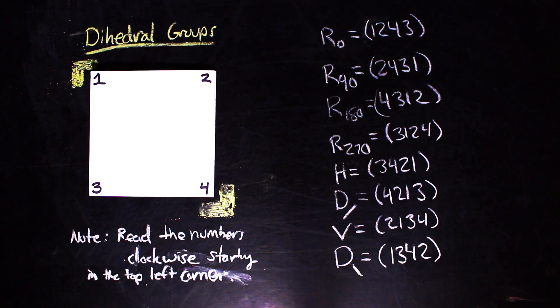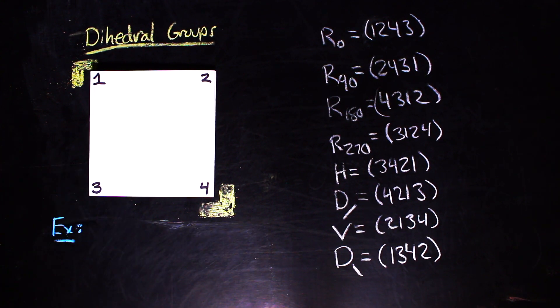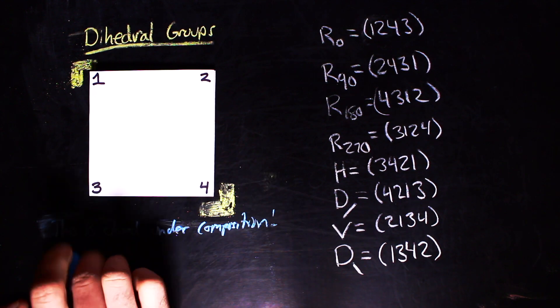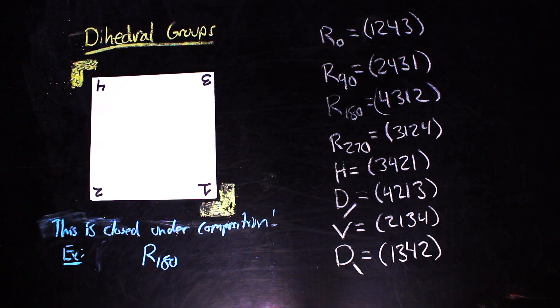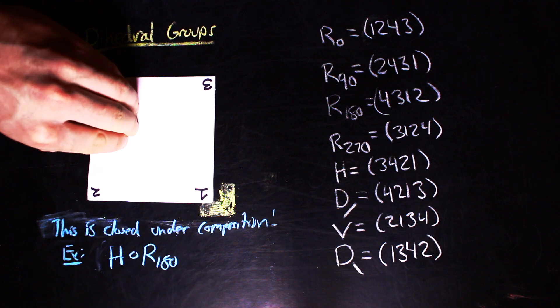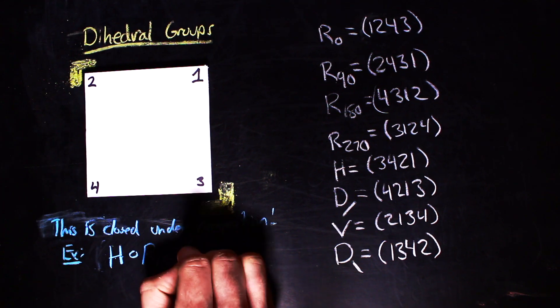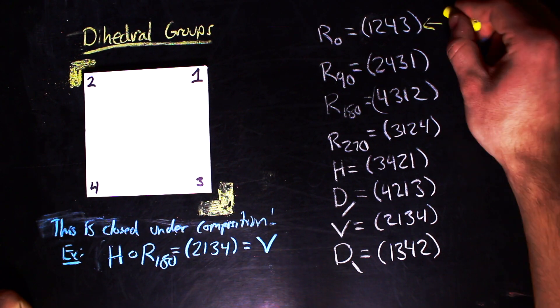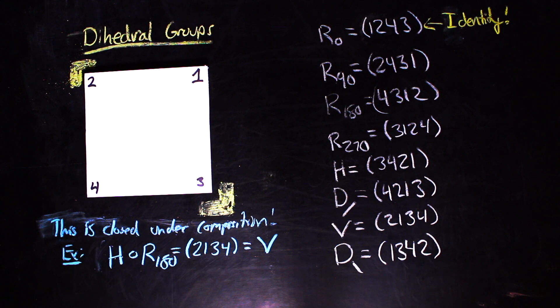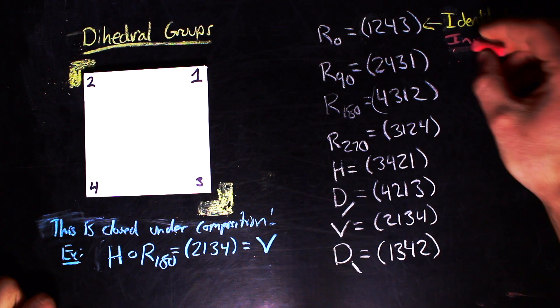And then you can flip over the diagram over one of its four lines of symmetry. The cool thing here is that if you take any two of these movements, you get a string of numbers that you should have been able to get to in just one of the eight movements. So this operation of combining things is closed. The identity here is just to do nothing.